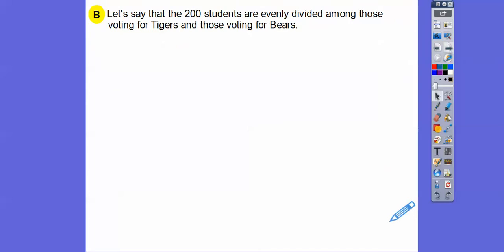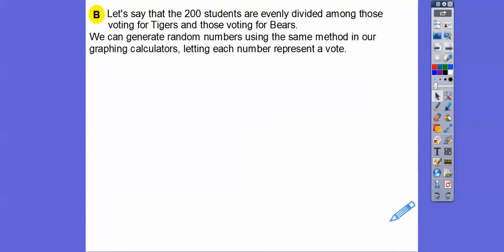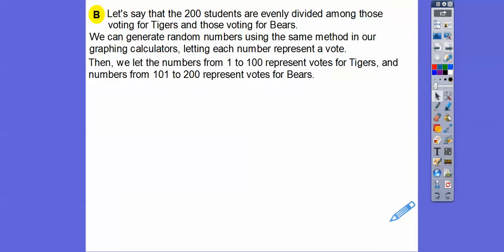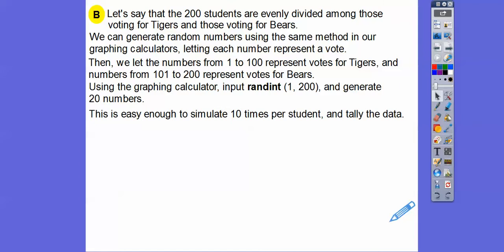All right. So here's a different way to do that. Let's say that the 200 students are evenly divided among the voting for the tigers and for voting for the bears. So let's say it's 50, 50. So what we can do is we can generate a random sample using the same method in our graphing calculators, which we just did. So random integer one comma 200, and then hit enter 20 times and letting each number represent a vote. And so what we could do is let the numbers one through a hundred represent the votes for the tigers. And then numbers 101 through 200 represent the votes for the bears. This is easy enough for everybody to be able to do this 10 times for each kid, if you have these graphing calculators and then tally the data.